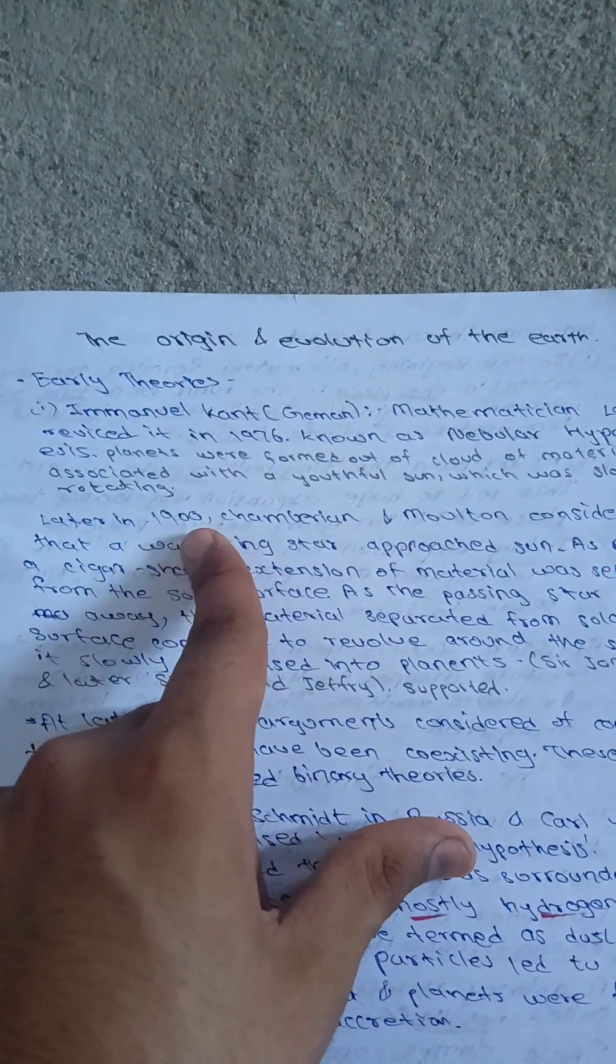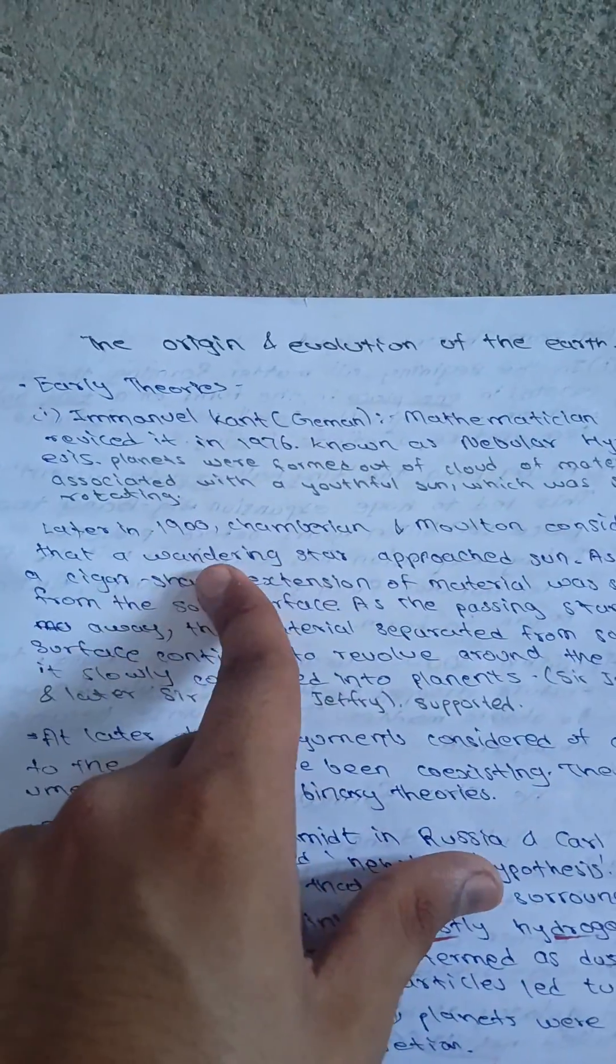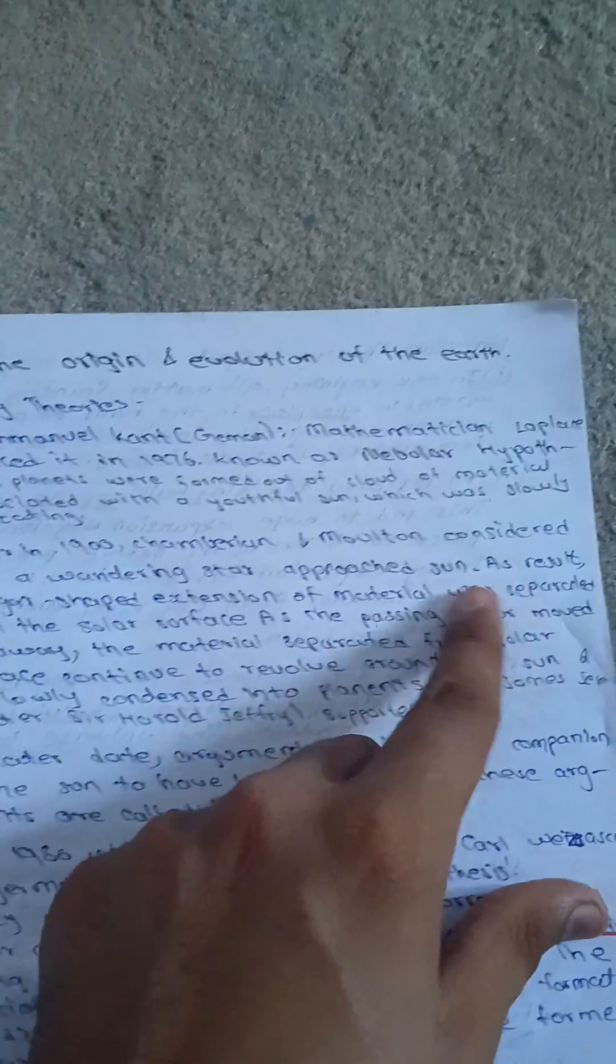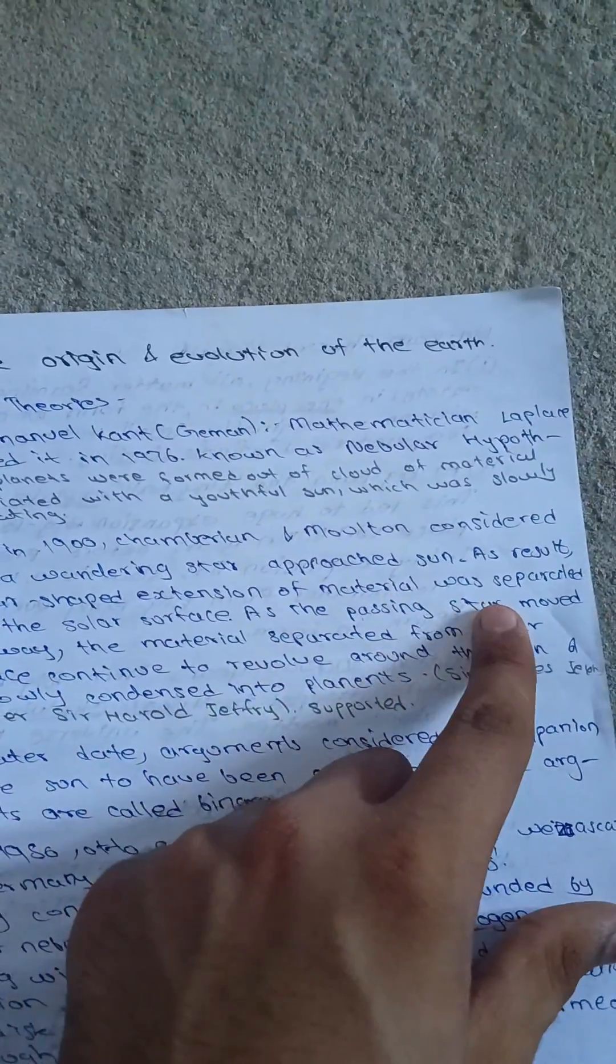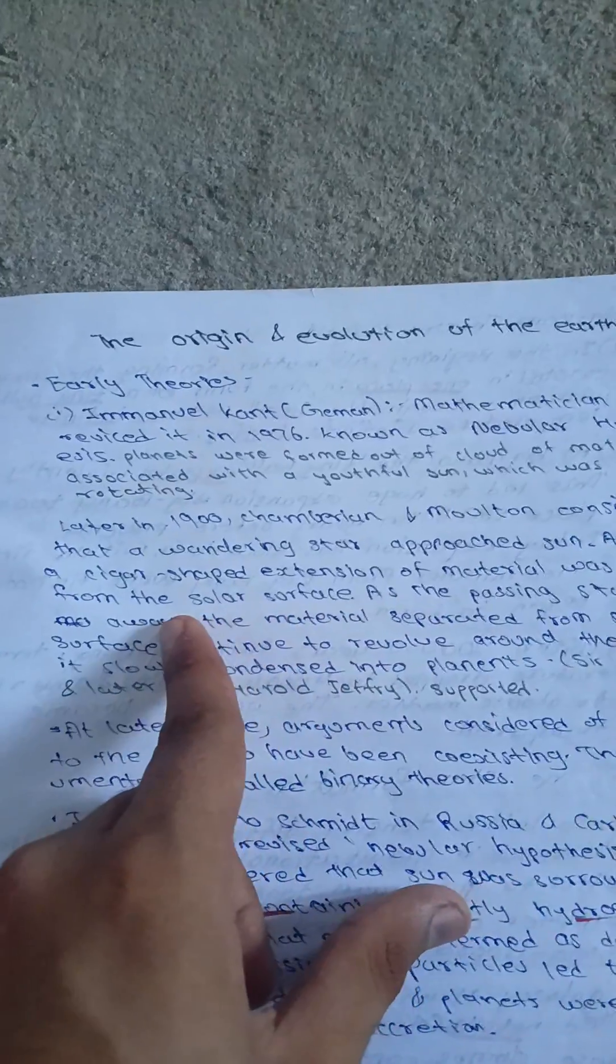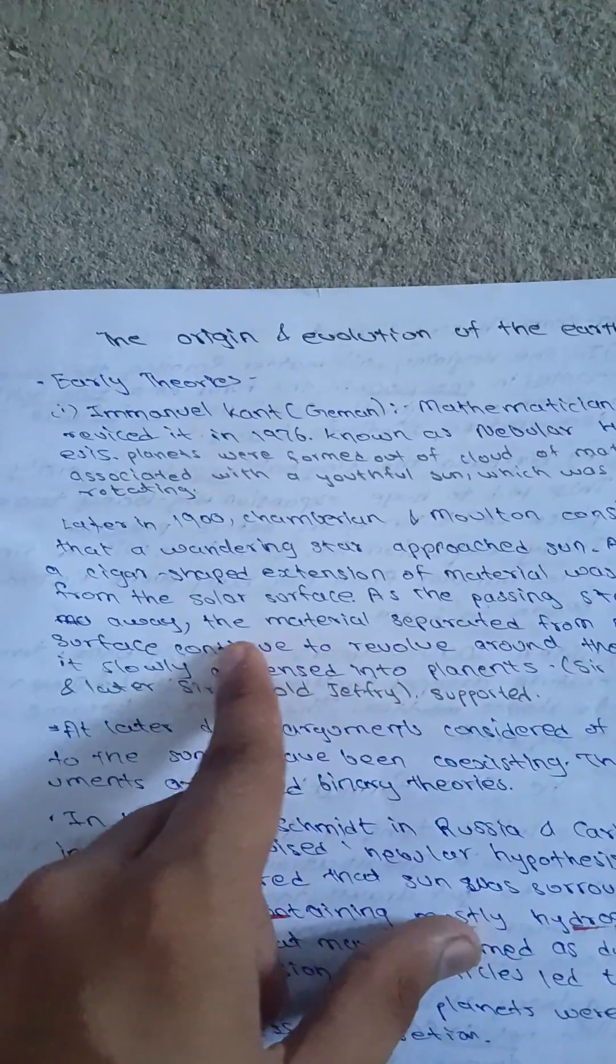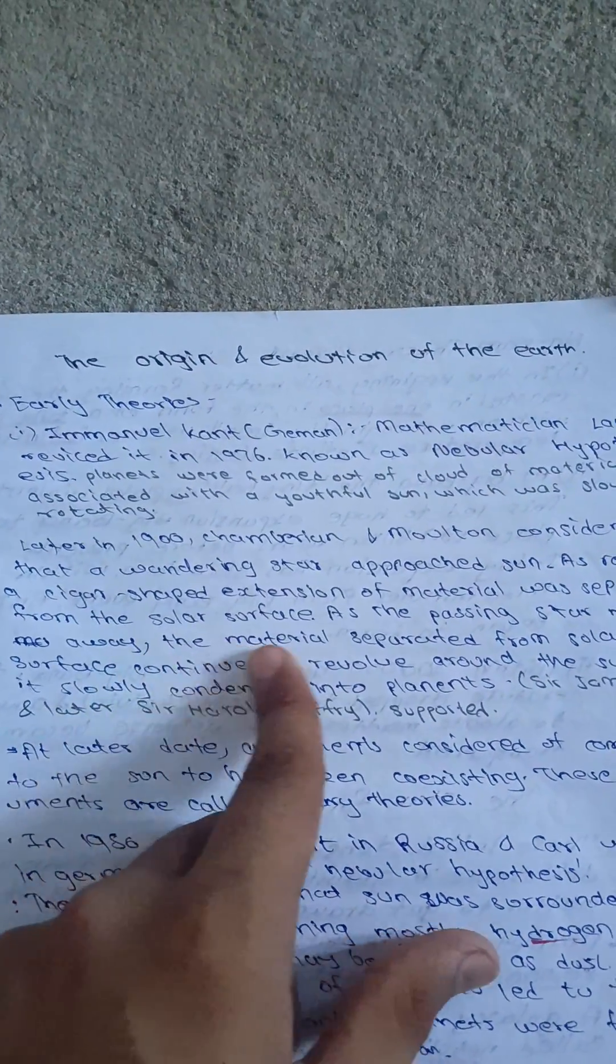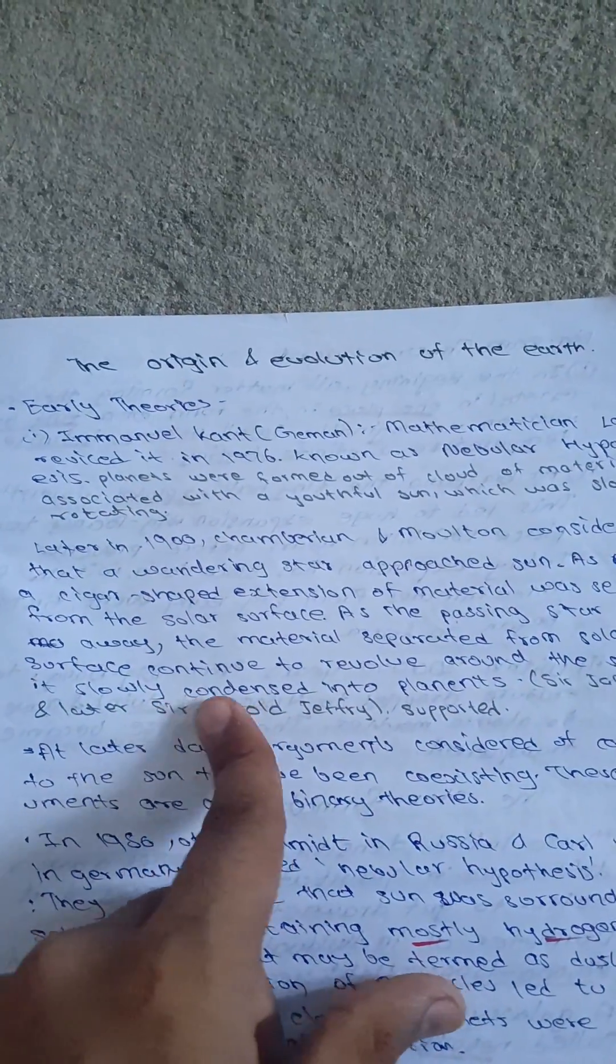Later in 1900, Chamberlain and Moulton considered a wandering star approached the Sun. As a result, a cigar-shaped extension of material was separated from the solar surface as the passing star moved away. The material separated from the solar surface continued to revolve around the Sun, and it slowly condensed into a planet.